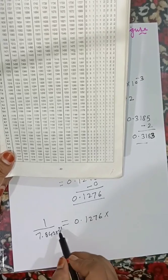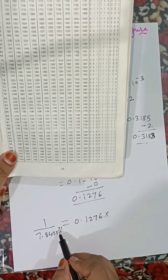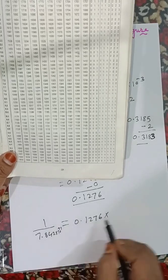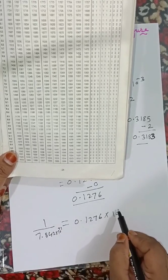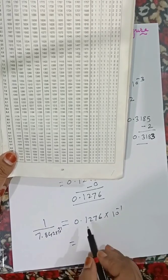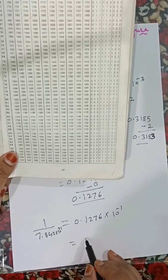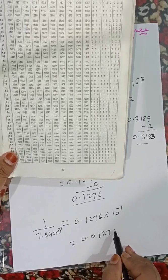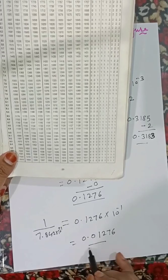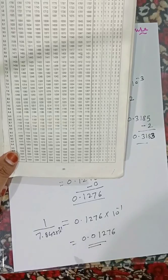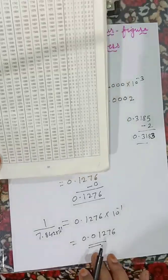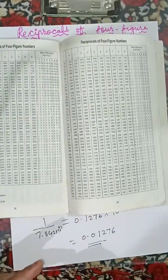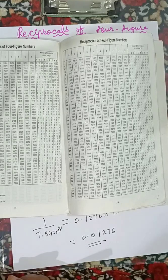Since 10 to the power of +1 is in the denominator, it becomes 10 to the power of minus 1 in the numerator, giving us 0.01276 as the final answer. Thank you very much for watching my video.